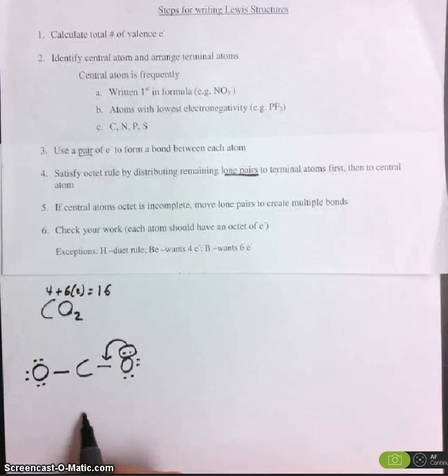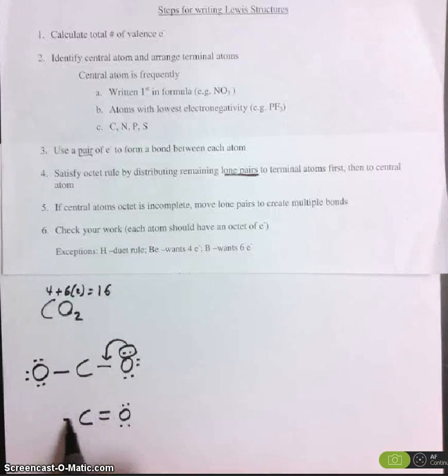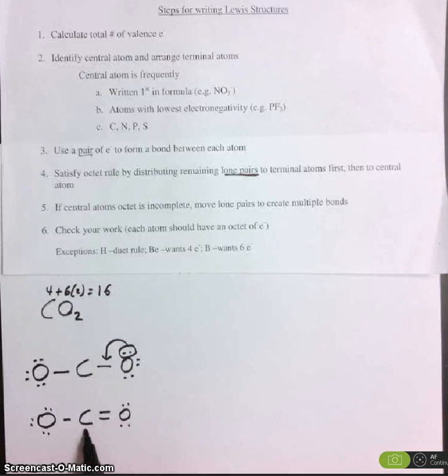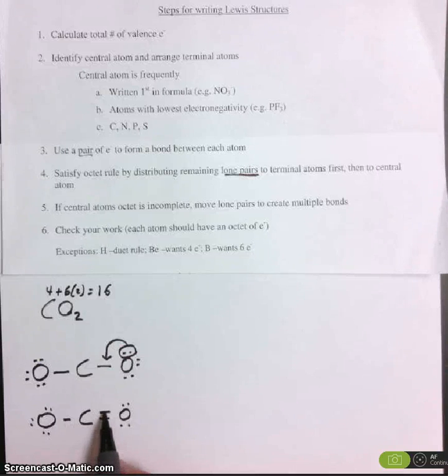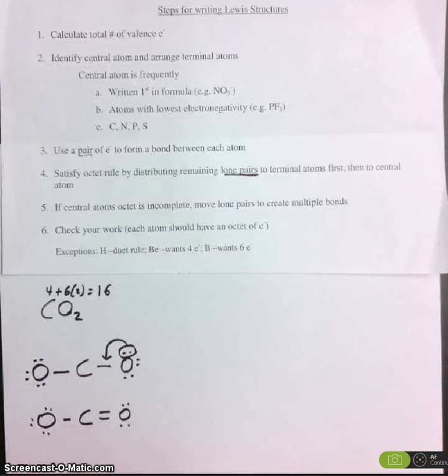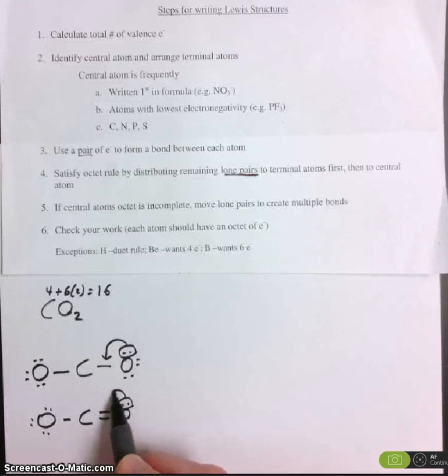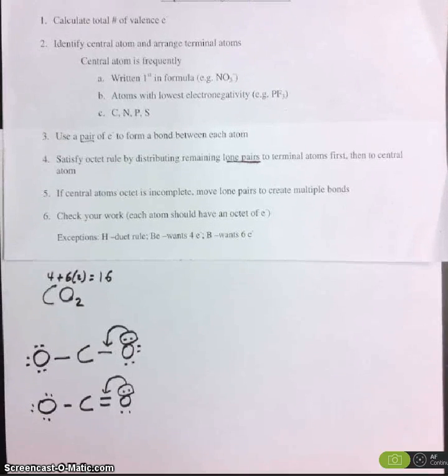So now, we'll have something that looks like this. Now you probably noticed that carbon's octet is still incomplete. Carbon only has two, four, six electrons around it. So what we need to do is take another lone pair and move it down. So now, it looks something like this.